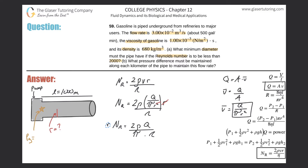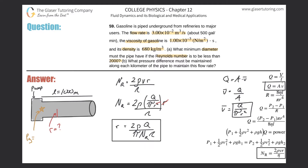Move r to the numerator on the left, then move the Reynolds number down into the denominator. This gives us r = 2ρQ / (π·Re·η). Since diameter D = 2r, multiplying both sides by 2 yields the diameter equation: D = 4ρQ / (π·Re·η).